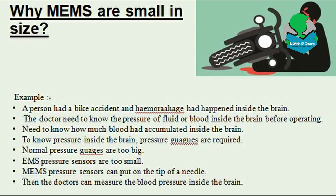Normal pressure gauges are too big for placing inside the brain. So, MEMS pressure gauge sensors are the solution for this problem. The MEMS pressure gauge sensors are very small — these small MEMS pressure sensors can be put in the tip of a needle. The doctors can measure the blood pressure by placing it inside the brain.